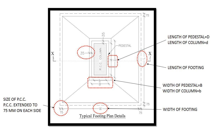This is the typical footing plan detail. From this you can find the length and width of footing — L is the length of footing and W is the width of footing. The size of PCC is also found from this drawing; PCC is extended to 75 mm from footing on both sides. Dimensions of pedestal and column are also given in this plan detail — small b is the width of column and small d is the length of column.